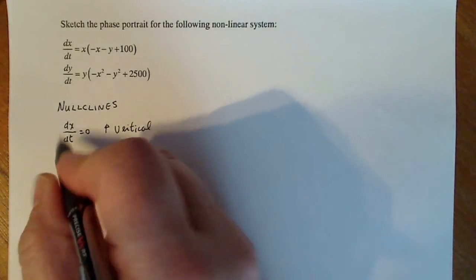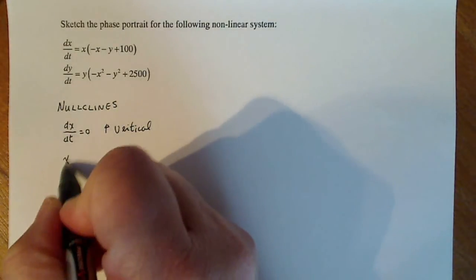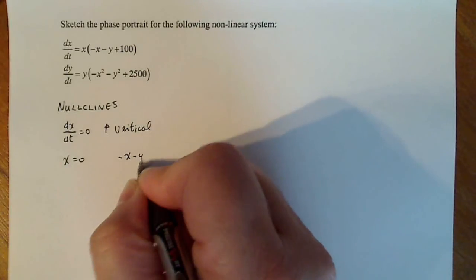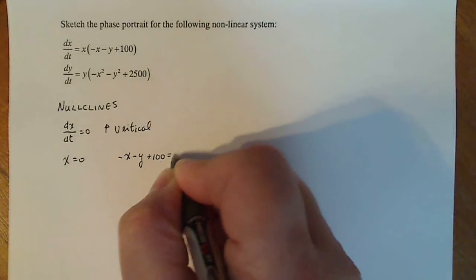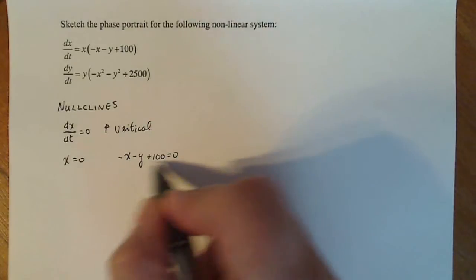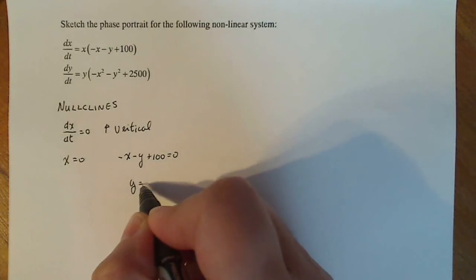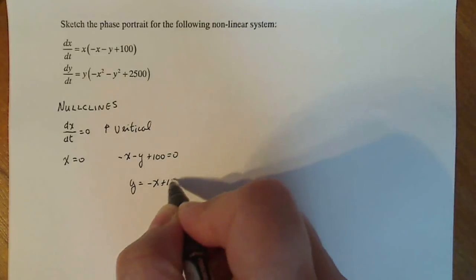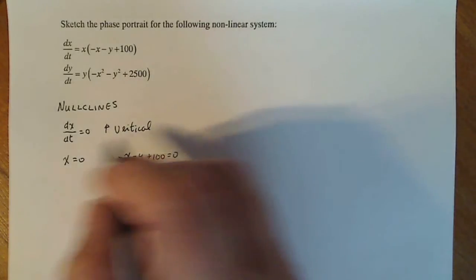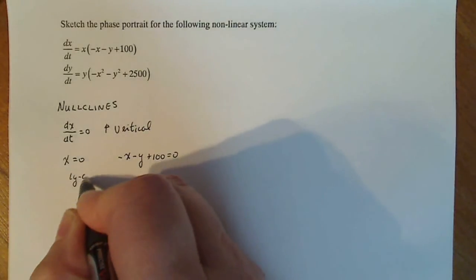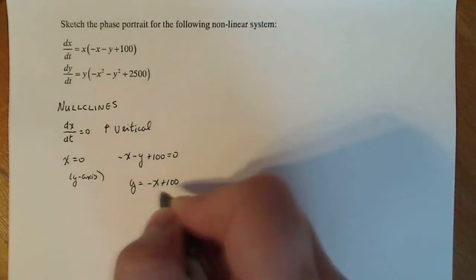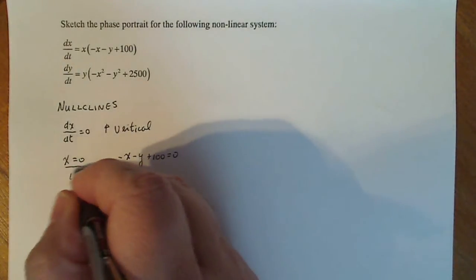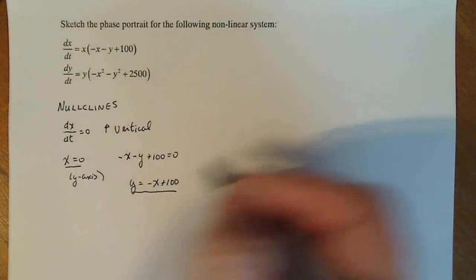When dx/dt equals zero, we get x equals zero and also when minus x minus y plus 100 equals zero. That looks linear, so solving for y gives y equals minus x plus 100. So one nullcline is the y-axis itself, and the other is a slanted line with a y-intercept of 100.